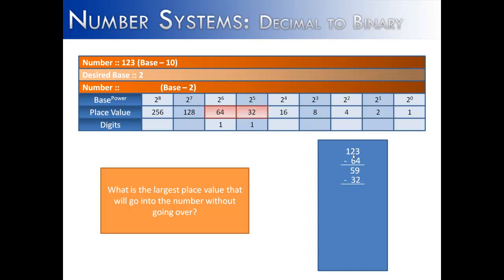We put a 1 beneath 32, then subtract 32 from 59 and get 27. The largest number that fits into 27 is 16 — we put a 1 underneath that, subtract to get 11. The largest number without going over is 8. When we subtract that we get 3. The largest number without going over would not be 4 because 4 is larger than 3, so it would be 2.